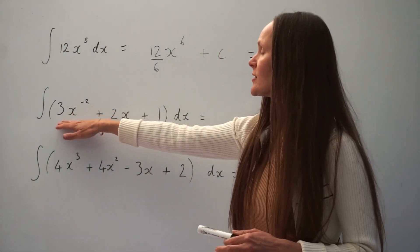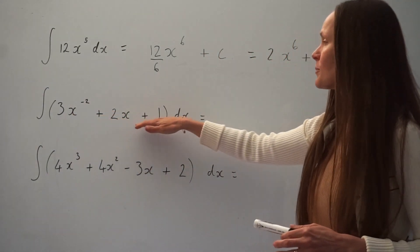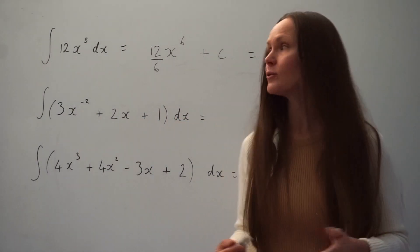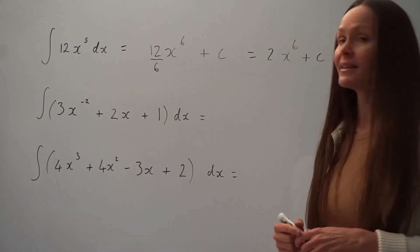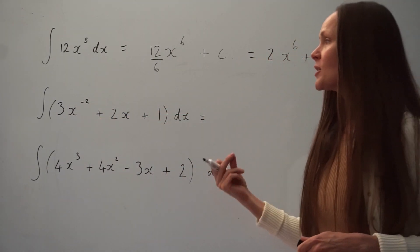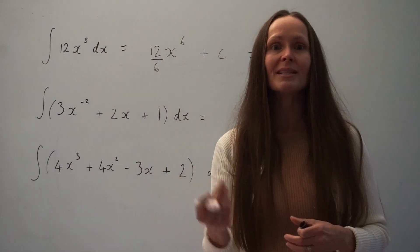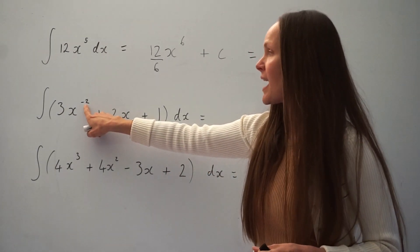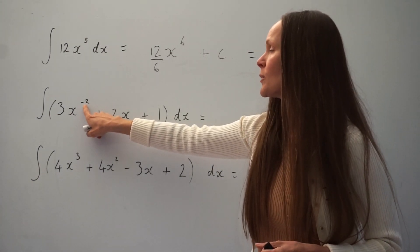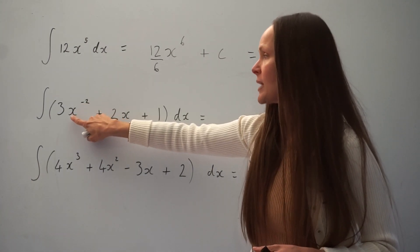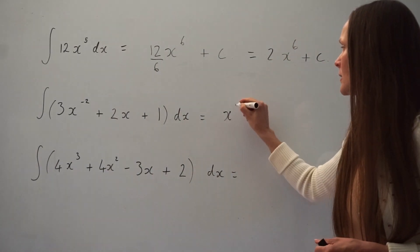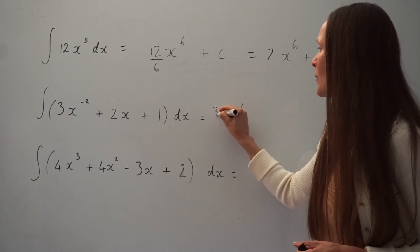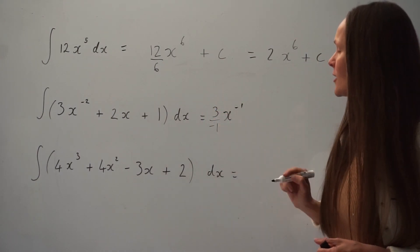In the next example we have to find the integral of 3x to the minus 2 plus 2x plus 1 with respect to x. There are several terms here that we need to integrate separately. We raise the power of x by 1 and divide by the new power. Taking the first term, negative 2 plus 1 is negative 1, so we get x to the power of negative 1, and we divide 3 by the new power of negative 1.